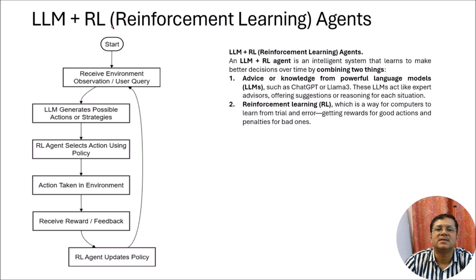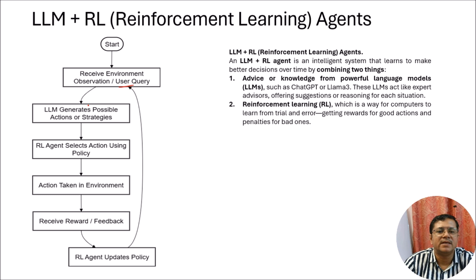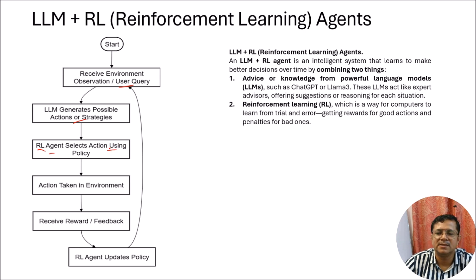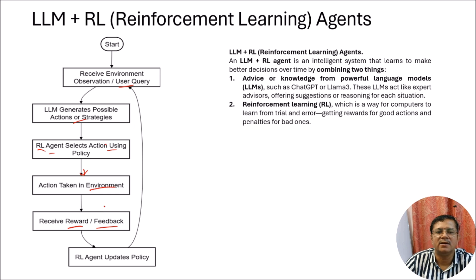Let us go into more detail about LLM plus RL agents, as this is part of our system. Generally we start with a basic environmental setup, variable setup, and agent setup, and after that we apply some user queries. Then the LLM generates possible actions or strategies based on the user queries. Reinforcement learning agents select those actions based on their policies, and those actions are applied to the environment. The system then gets some rewards or feedback, and based on that, the RL agents update the policy. This cycle continues and over time the system gains more maturity.